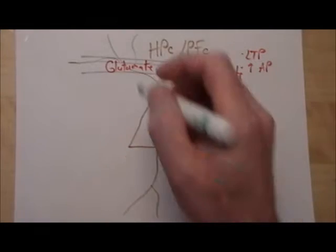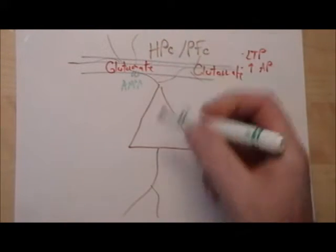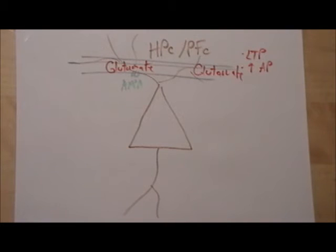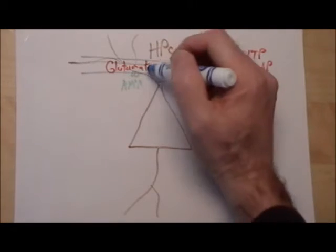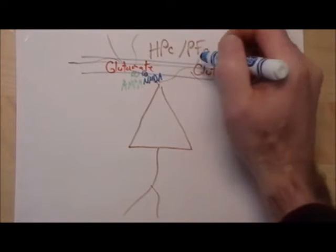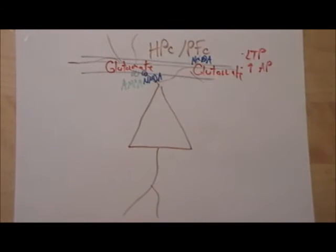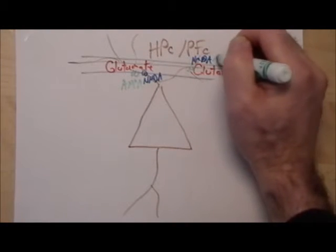So when glutamate is dropped off, it binds to both AMPA and NMDA receptors. Typically these are co-localized, so I'm going to draw them really close together on these post-synaptic spines. So NMDA and AMPA.